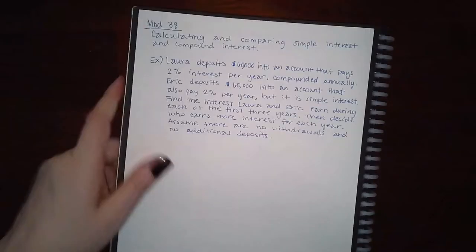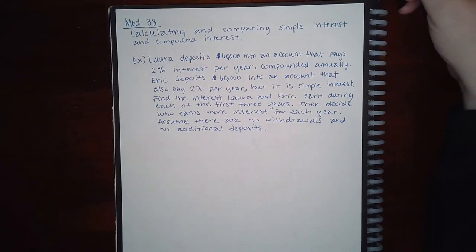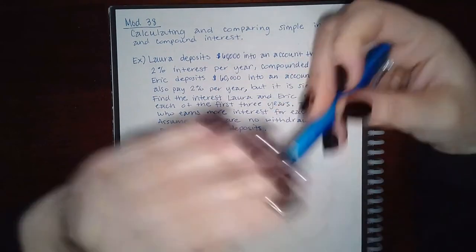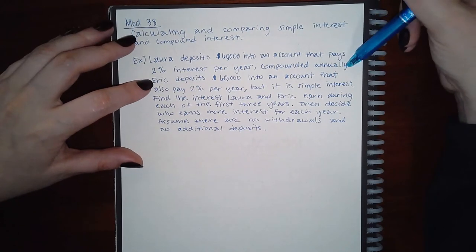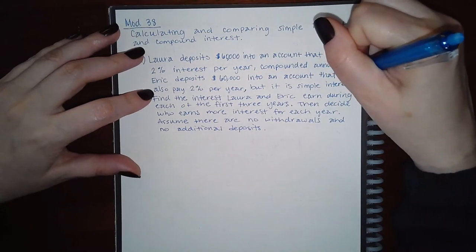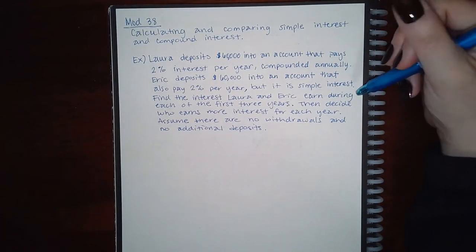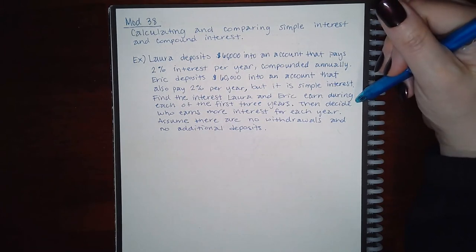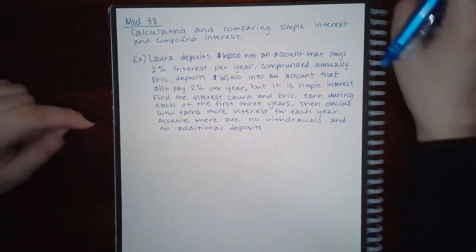In this section it is nothing but word problems. This is module 38, first topic: calculating and comparing simple interest and compound interest. Laura deposits sixty thousand dollars in an account that pays two percent interest per year compounded annually. Eric deposits sixty thousand into an account that also pays two percent per year but it is simple interest. Find the interest Laura and Eric earn during each of the first three years, then decide who earned more interest for each year — assume no withdrawals and no additional deposits.